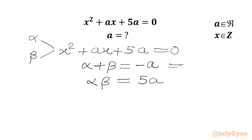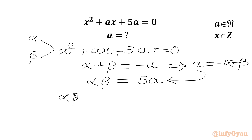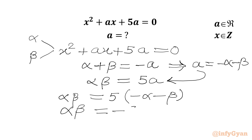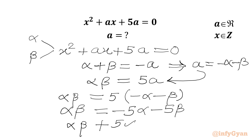From our first equation, I will calculate the value of A which will be equal to minus alpha minus beta. And this value we are going to apply in the product equation. So I can write: alpha times beta will be equal to 5 times (minus alpha minus beta). Or we can write alpha beta equal to minus 5 alpha minus 5 beta. Taking all terms to the LHS, we will write alpha beta plus 5 alpha plus 5 beta equal to 0.